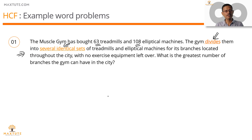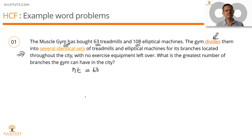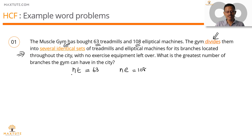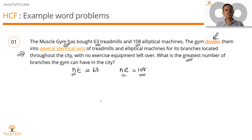We'll solve this in a subsequent video, but let's create the framework. Let the number of branches be n, and the number of treadmills each branch receives be t, so n × t = 63. Each branch also gets e elliptical machines, so n × e = 108. Therefore n is a factor of 63 and n is a factor of 108 — n is a common factor of both. We're finding the greatest number of branches, so the maximum n is the highest common factor of these two numbers. The keyword is dividing into several identical sets — that's a HCF question.